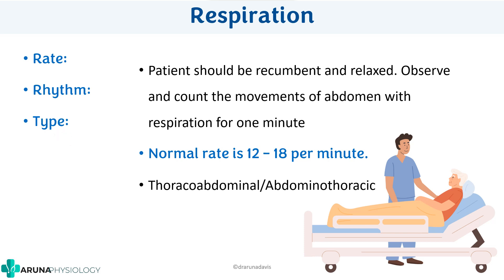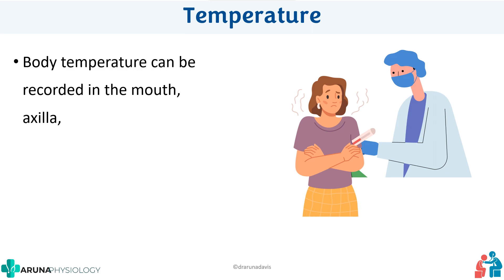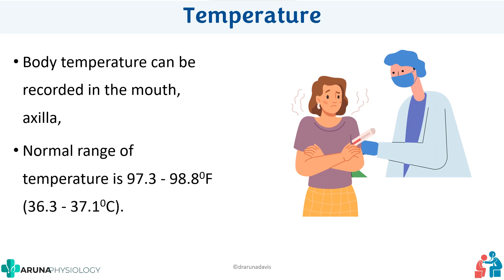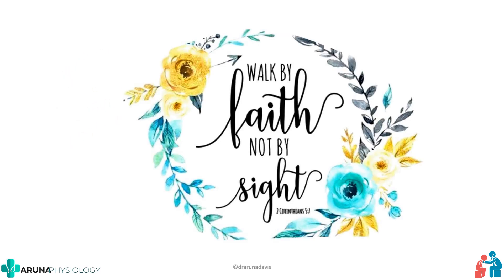Finally, check the temperature using oral or axillary measurement. The normal temperature range is 97.3 to 98.8 degrees Fahrenheit, or 36.3 to 37.1 degrees Celsius. That completes our vital signs, which include pulse, blood pressure, respiration, and temperature. Thank you.